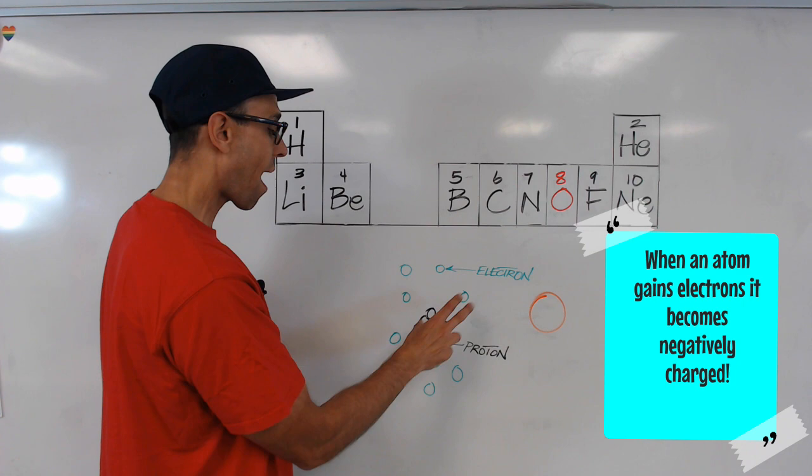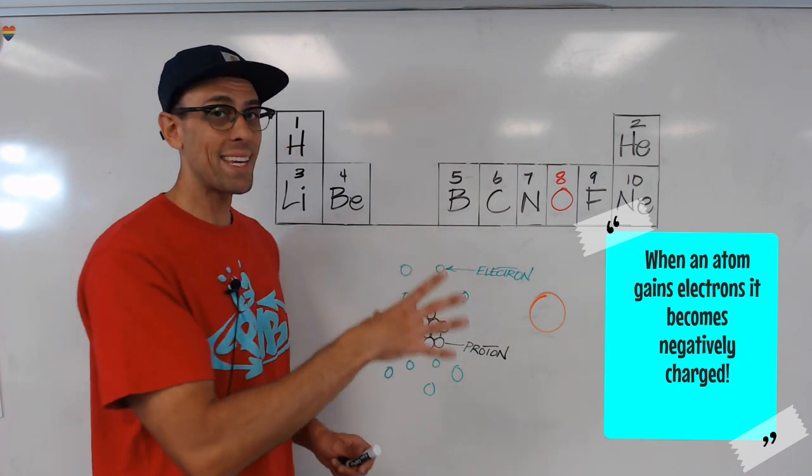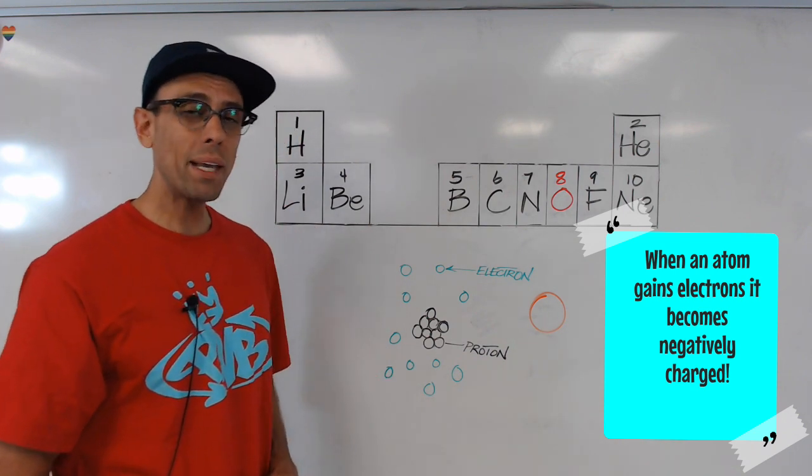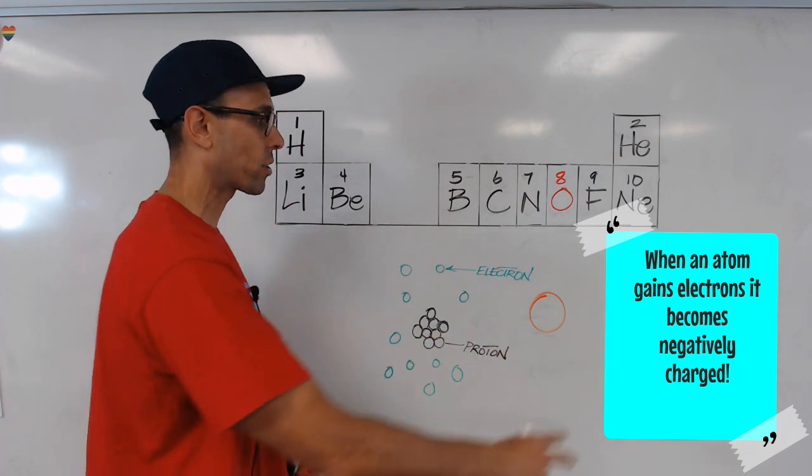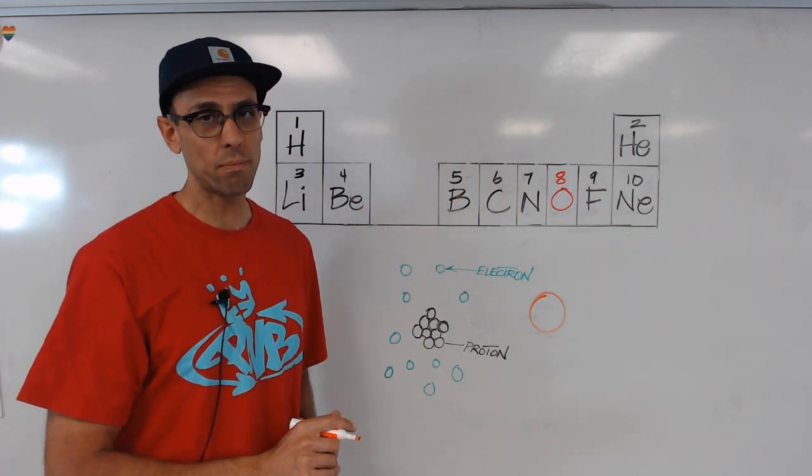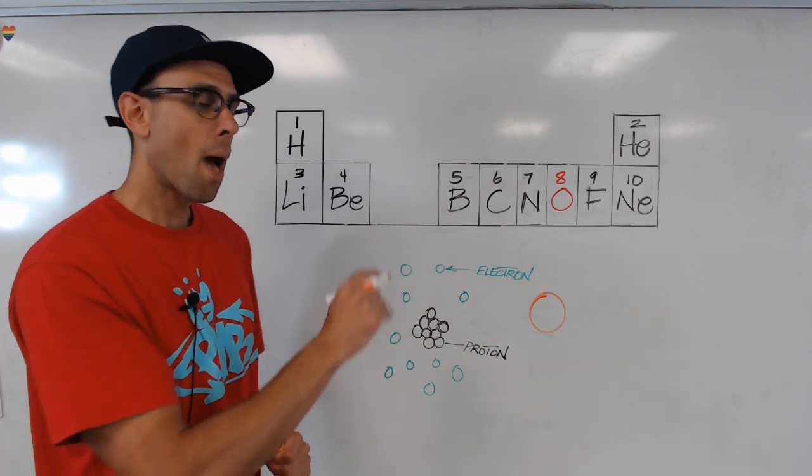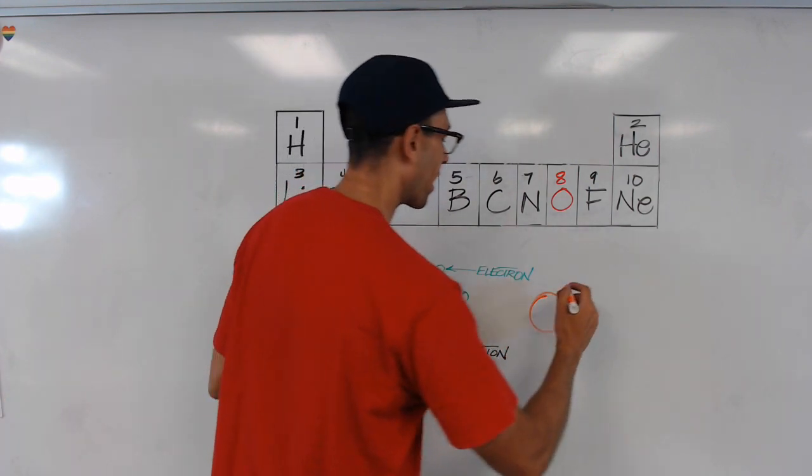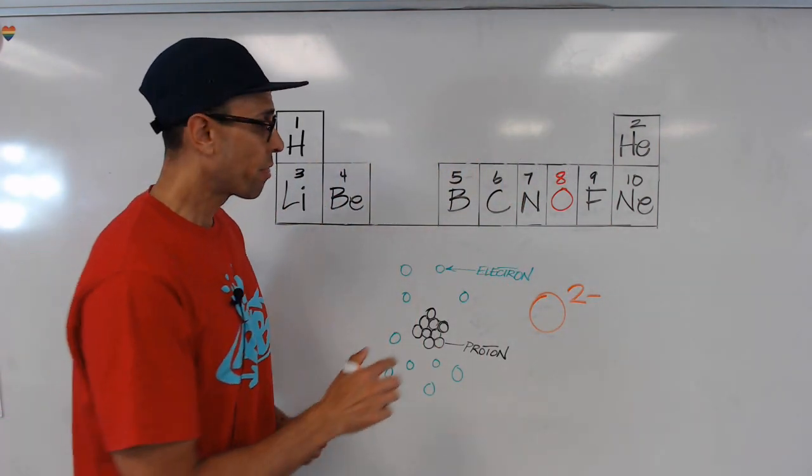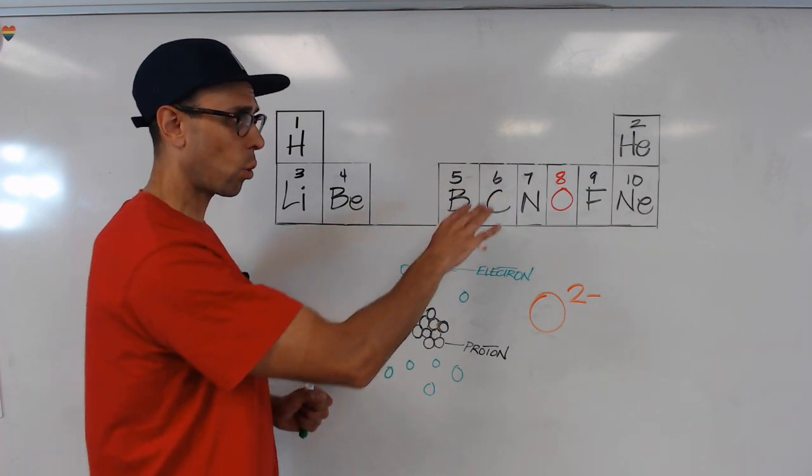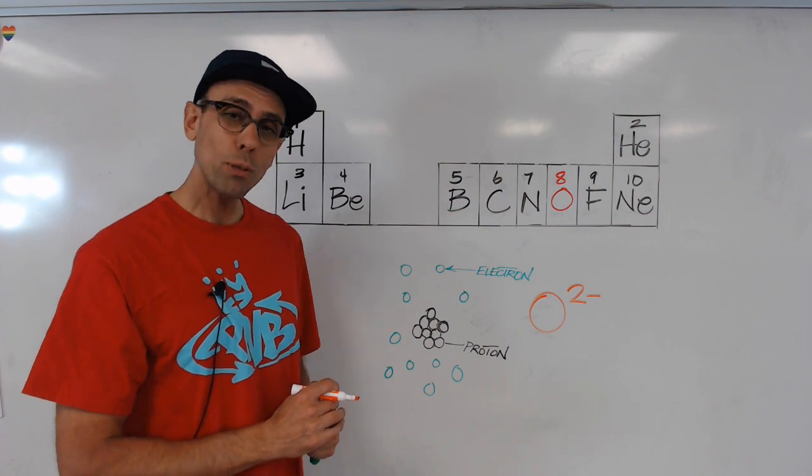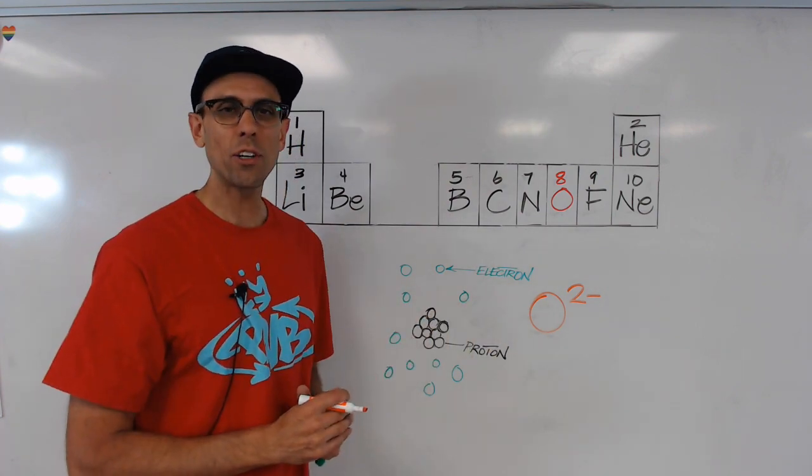We no longer have the same number of positive protons and negative electrons. So oxygen is not going to be neutral at this point. Instead, because it's gained extra electrons, two of them, it's now going to have two extra negative charges. So we represent that by saying the charge of oxygen as an ion is two minus, or negative two. Those extra electrons it gained in order to be like neon disrupt the balance and outweigh the number of positive protons, resulting in a negatively charged ion.